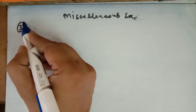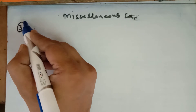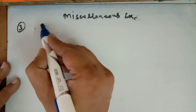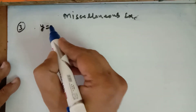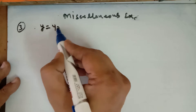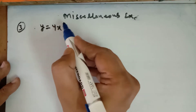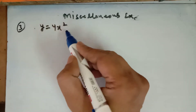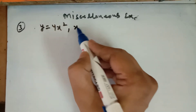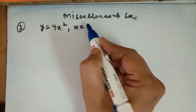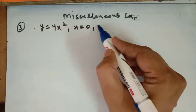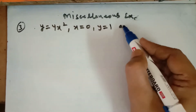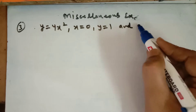In this question we have to find the area lying within the first quadrant for the curve y is equal to 4x squared, bounded by x is equal to 0, y is equal to 1, and y is equal to 4.